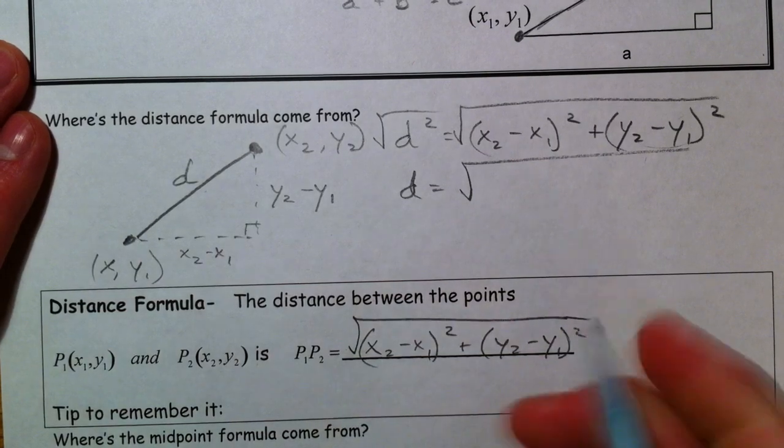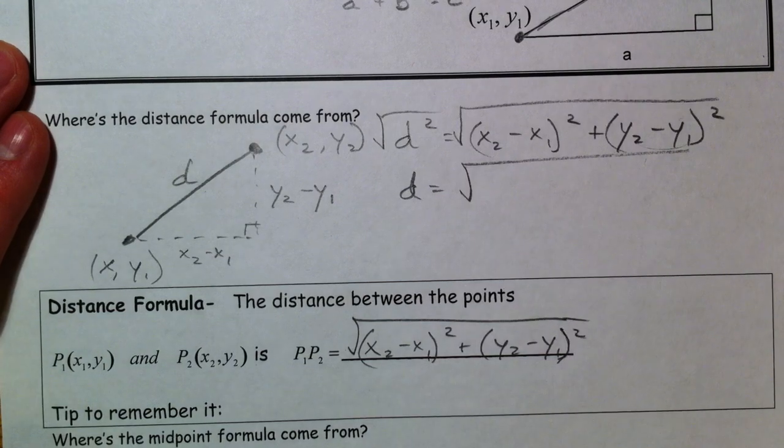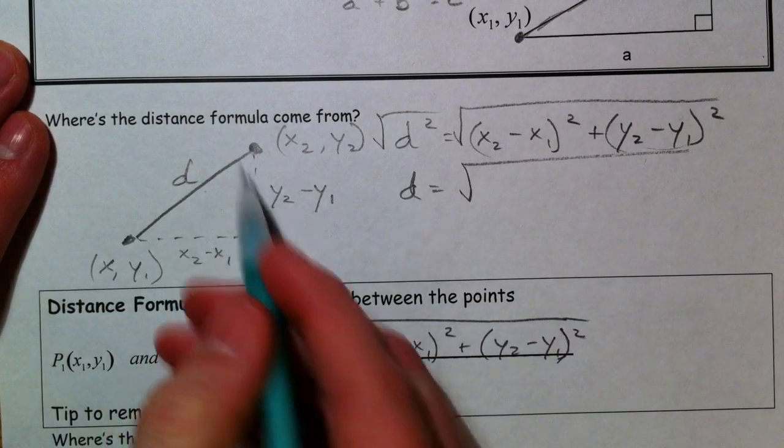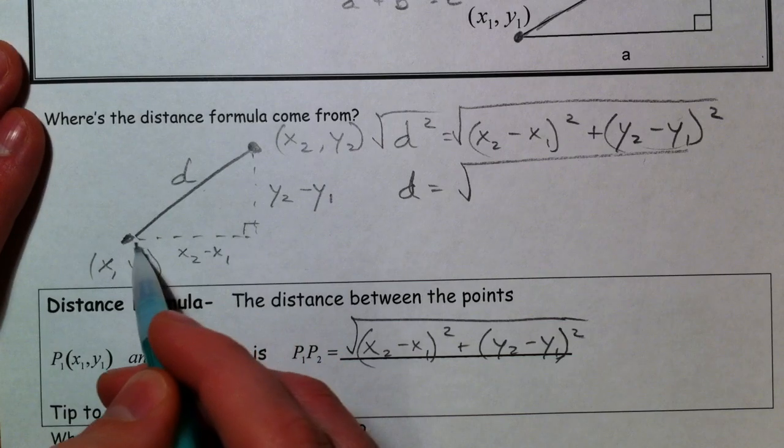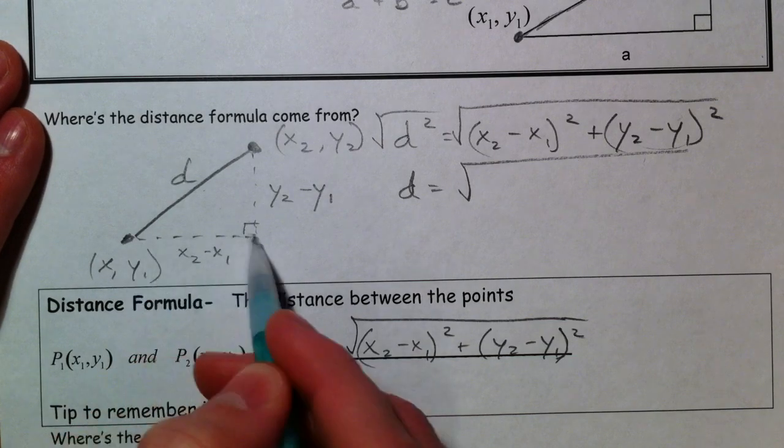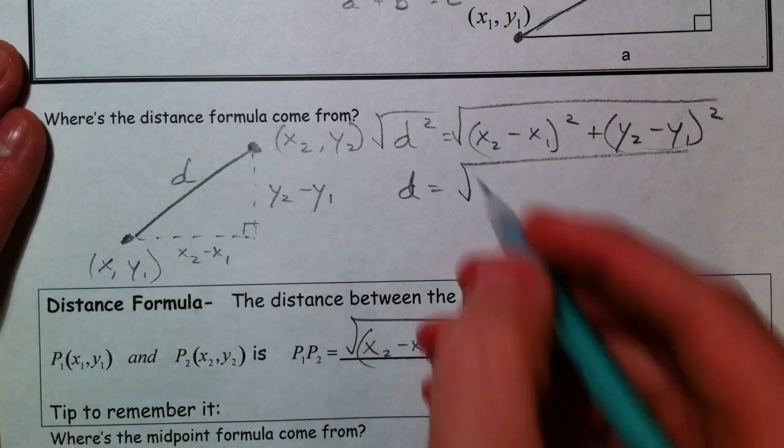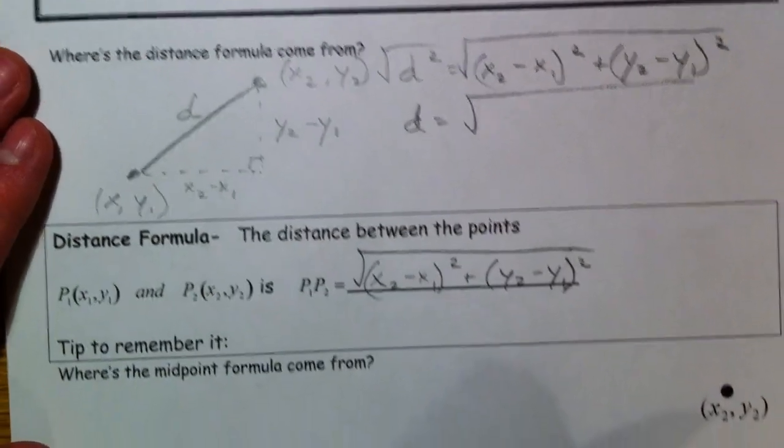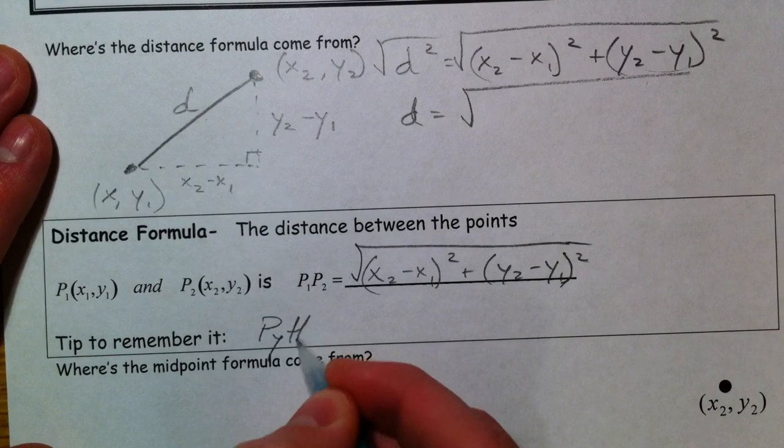Notice that this is your a squared, this is your b squared, and the only thing we're going to do now is take the square root of both sides, and you have your distance formula. So people always mess up or forget: is it plus, is it minus, where is it plus, where is it minus? Here's the deal: it's just Pythagorean theorem. We subtract because we're finding how far we went to the right or to the left; you subtract. How far up and down, you subtract. Tip to remember it: it's the Pythagorean theorem in disguise.